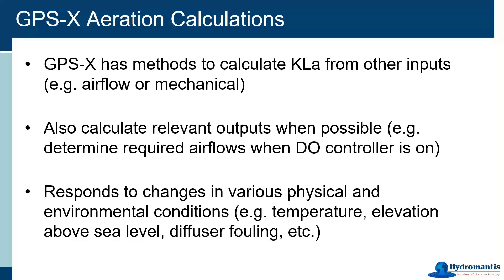We also calculate a number of other relevant inputs and outputs that are part of that mass transfer calculation, such as the oxygen transfer rate, the oxygen solubility, and a few other things. If you have the DO controller on, for example, we'll be calculating the DO — but we'll also calculate what airflow was required by the DO control system to meet that set point. All of that aeration model is also a property of the physical environmental conditions: things like the air temperature, the liquid temperature, the elevation above sea level, diffuser fouling, and so on. The good thing is, because we are taking all of those things into account, you can see outputs for either standard airflow or field airflow — we're calculating both.